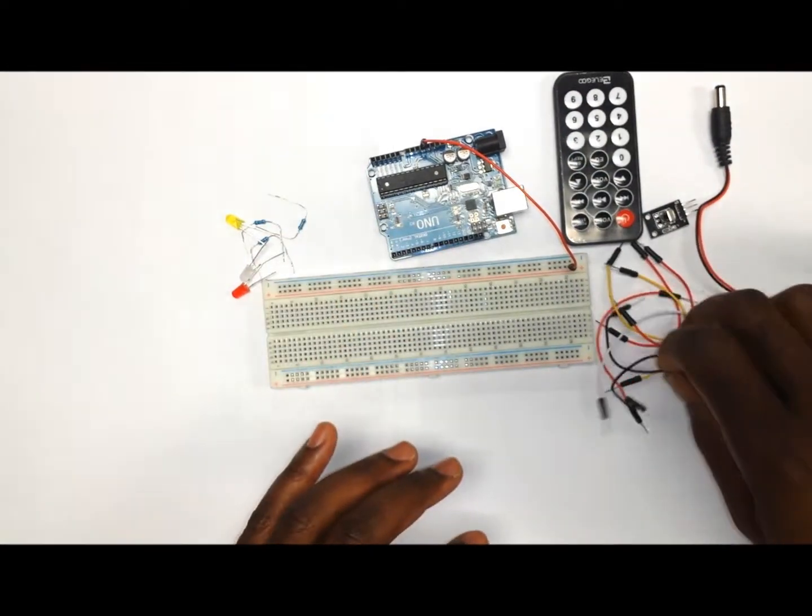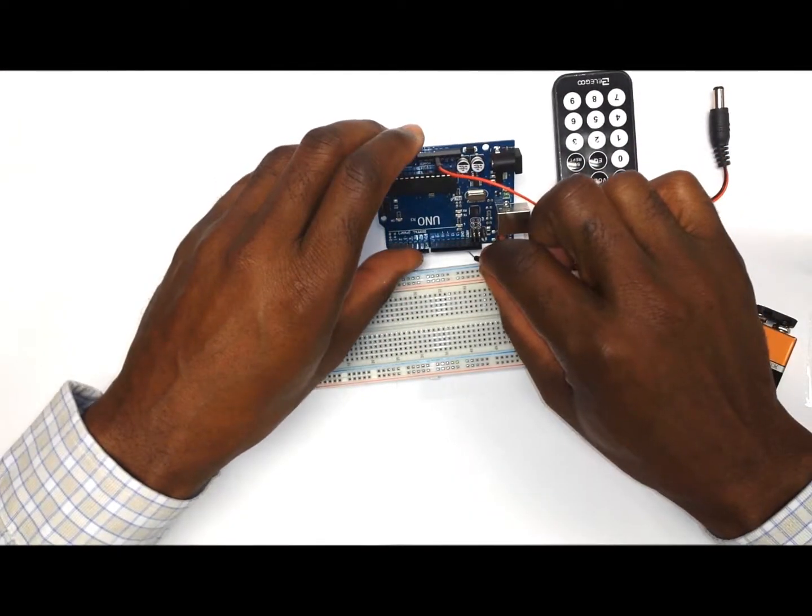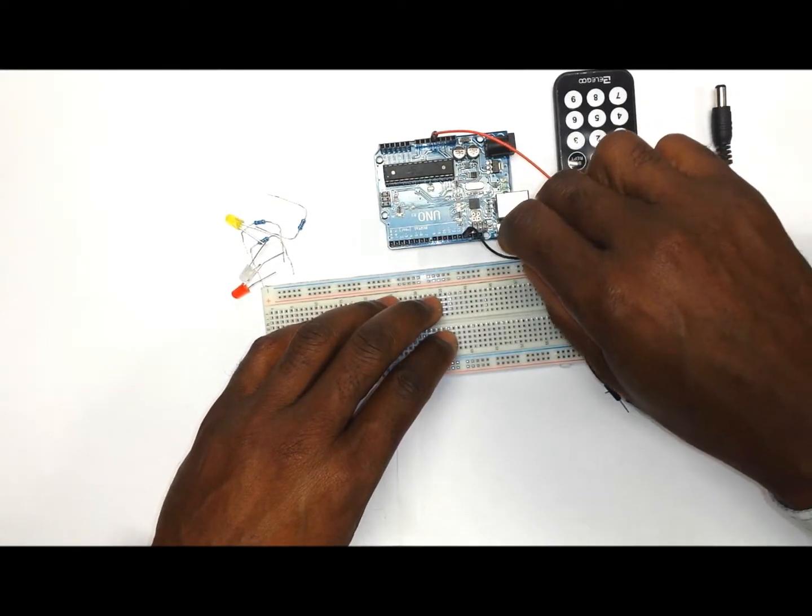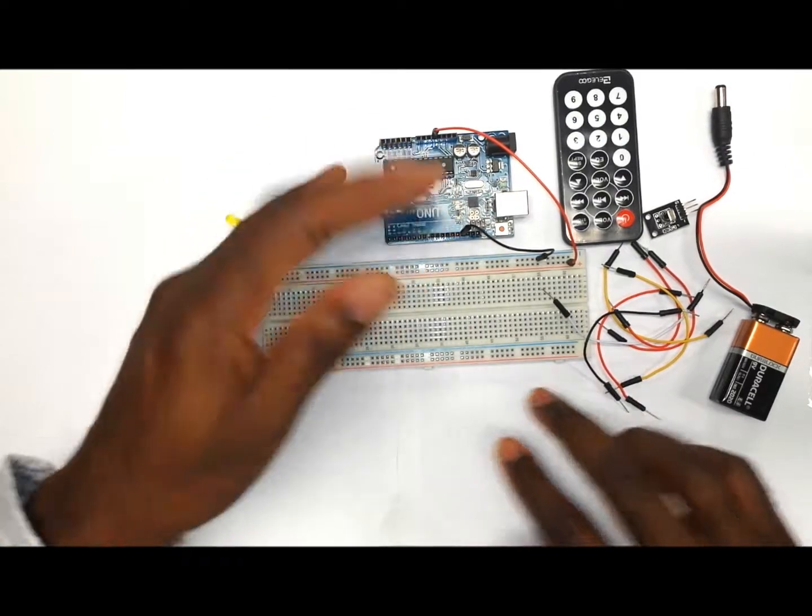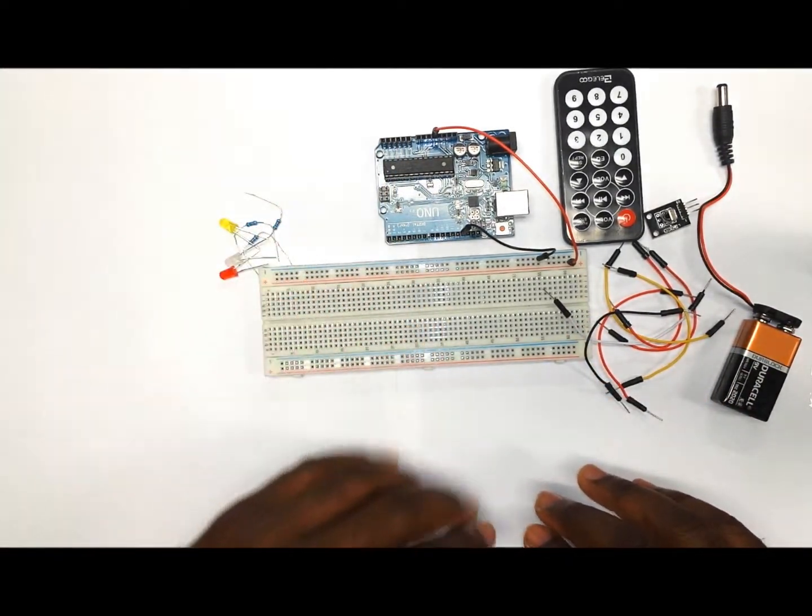The next wire we want to put is the ground wire. We are going to get it from the ground on the Arduino onto the negative rail of the breadboard. This ensures that all the other peripherals you are going to put on are going to get their power from the breadboard.